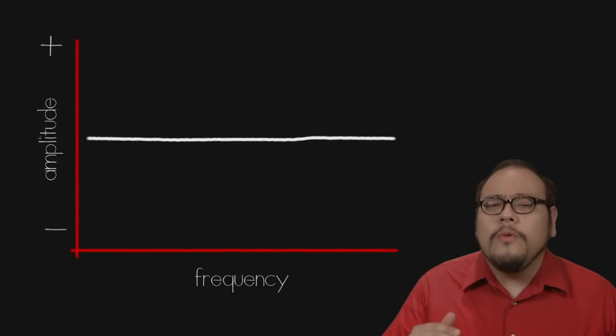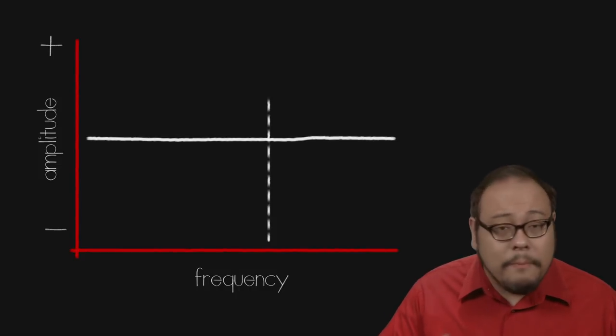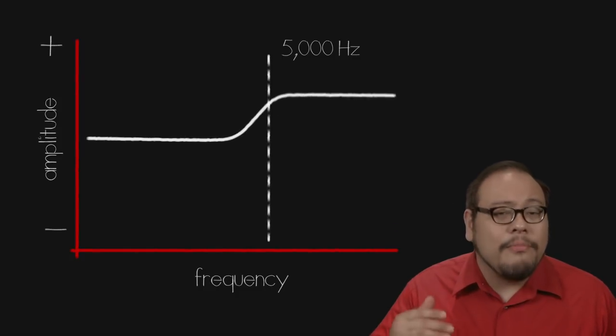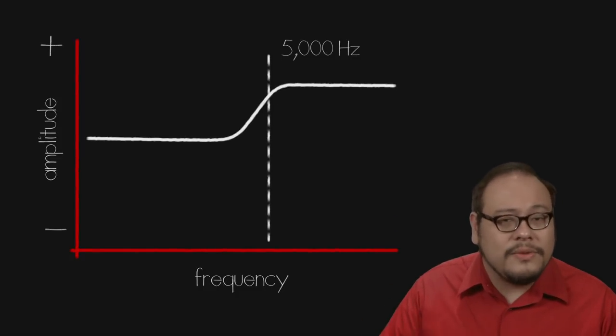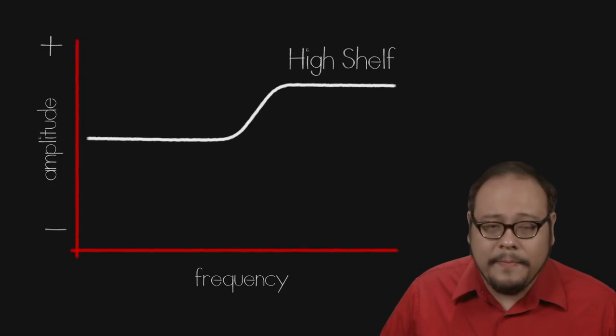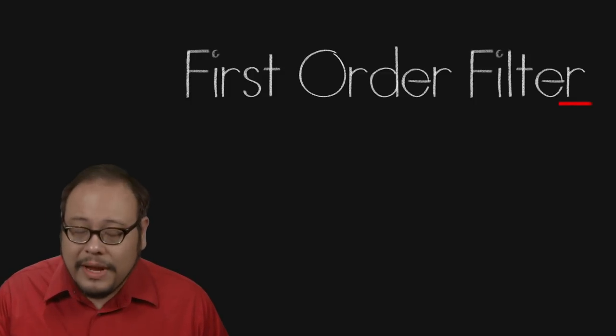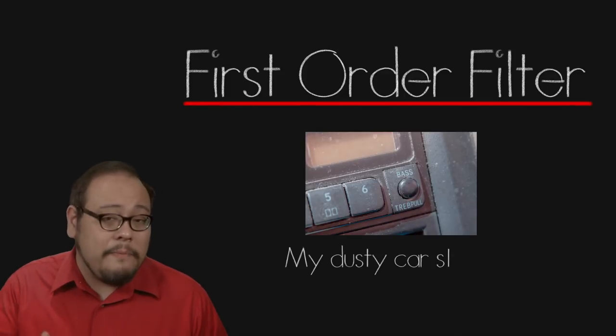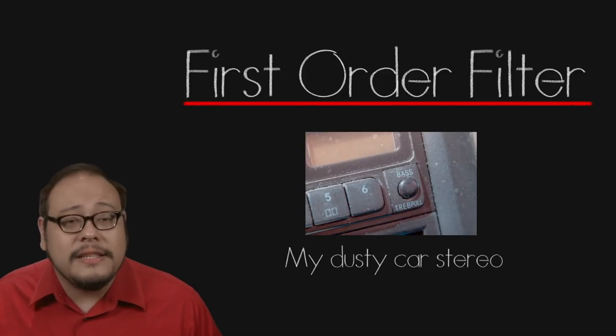Let's say we want to boost only the high frequency say everything above 5000 hertz. Our straight line is now broken into two levels with a slope in between. This is called a high shelf. This type of equalization called a first order filter is the simplest kind of equalization to perform using electronic components and this is found on your basic consumer hi-fi systems.